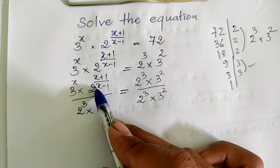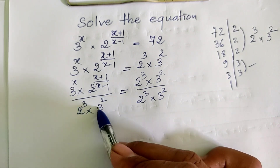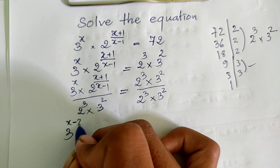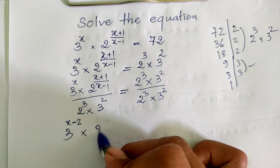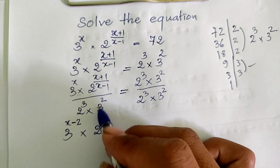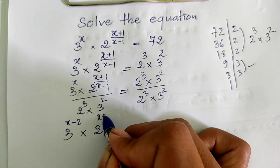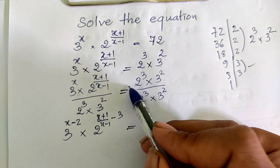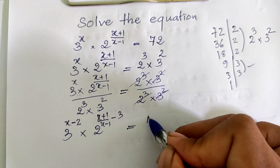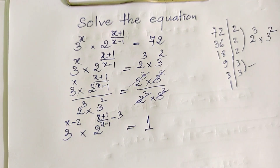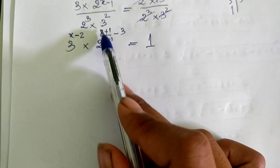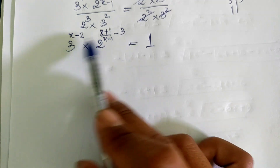Now you see this term has base 2 the same, and this term has base 3 the same. So we can write 3 power x minus 2, multiplied by 2 power x plus 1, divided by x minus 1, minus 3. And this simplifies because these terms equal 1 after cancellation. Our equation now has the different bases but we can consider the exponents separately.